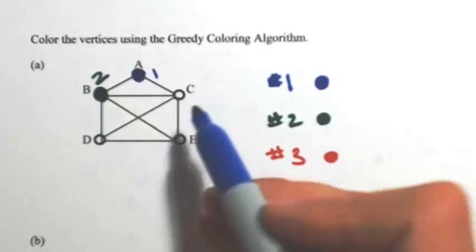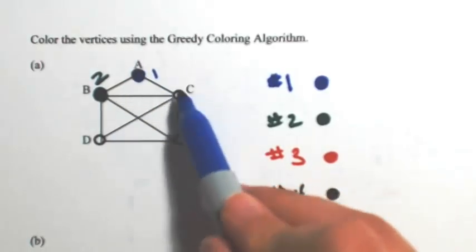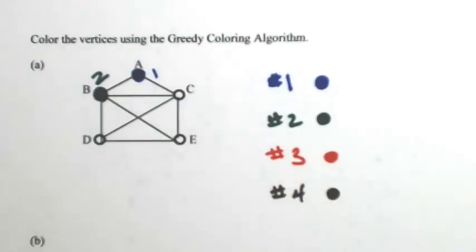The next letter is C. C is connected to A and B, so I can't use 1 or 2, so I've got to use the next one, which is 3.